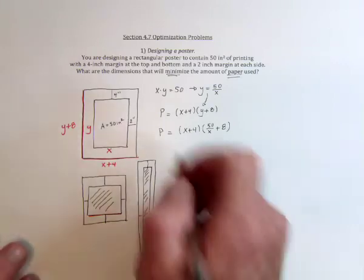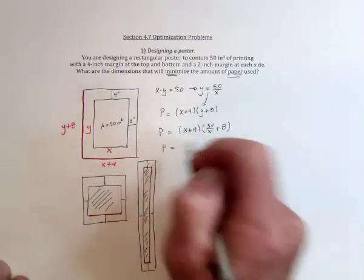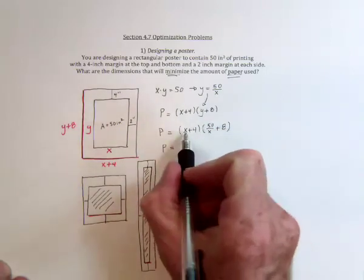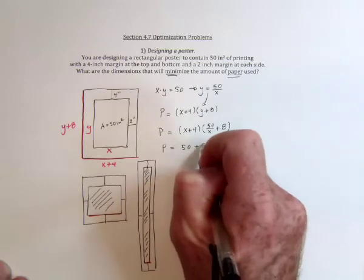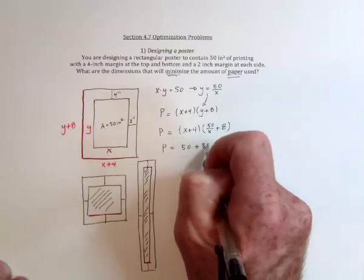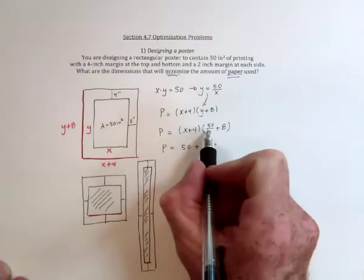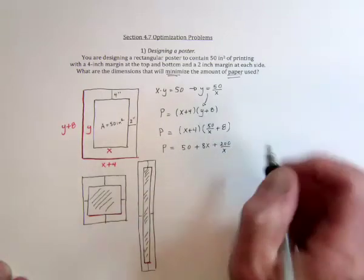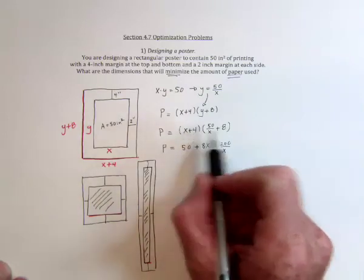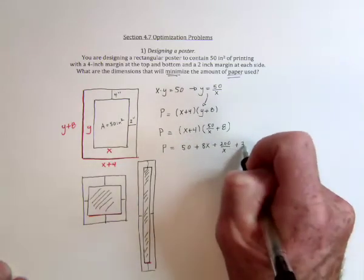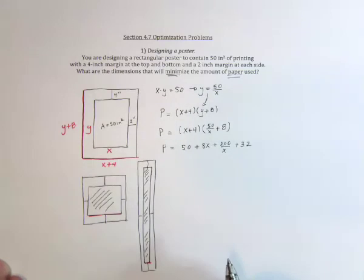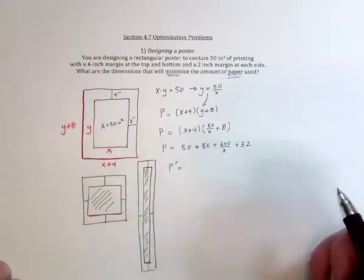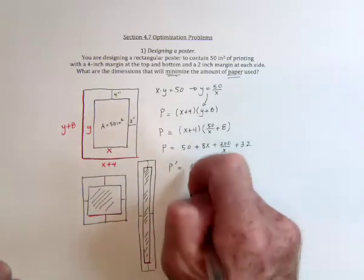The way to proceed is multiply this out. So multiply these two, the x's will cancel. Multiply these two, it's going to be an 8x. And then the middle term would be 200 over x. And then we would have this one times this one is a 32. And then take the derivative. So that's going to be 0, that's going to be an 8.